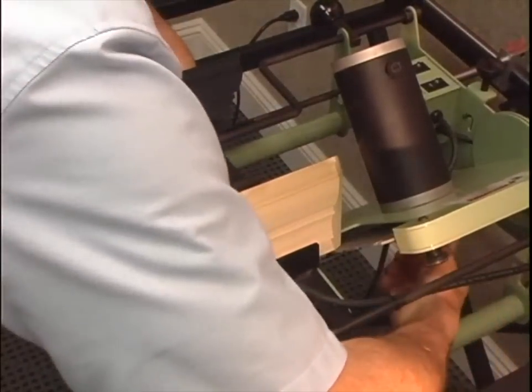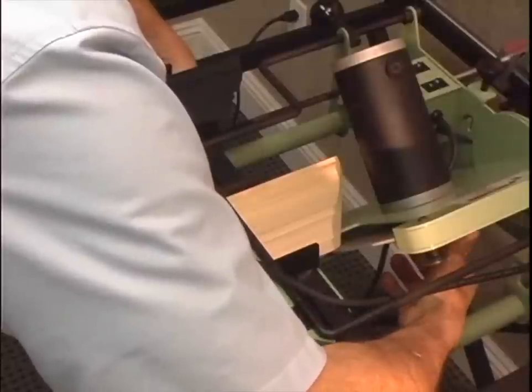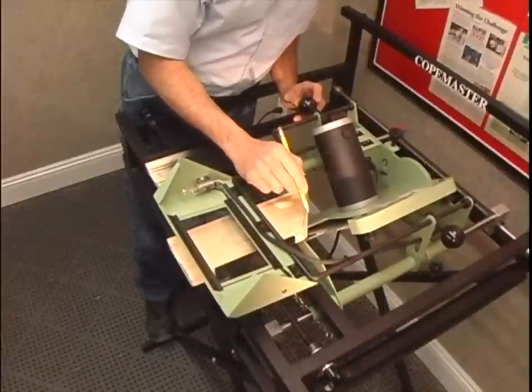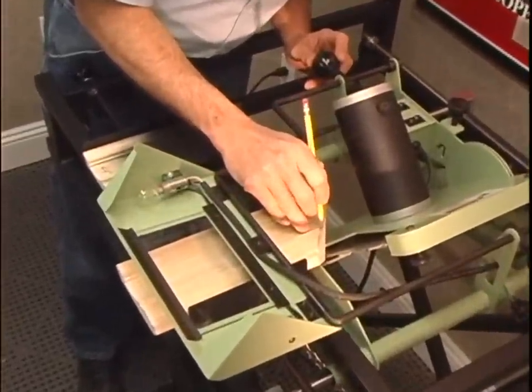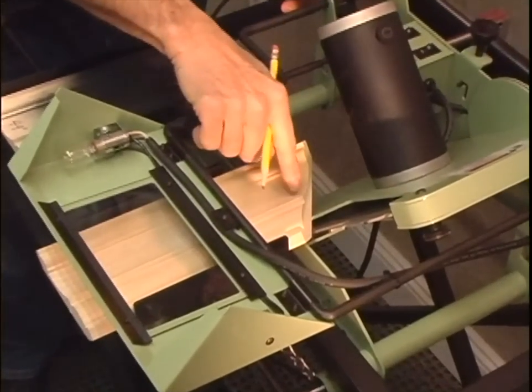With your right hand, spin the saw blade using the knurled knob, making the adjustment left to right until the blade just ticks the workpiece. Choose a spot on the workpiece where the molding will get paper-thin. On this crown, it's right here.